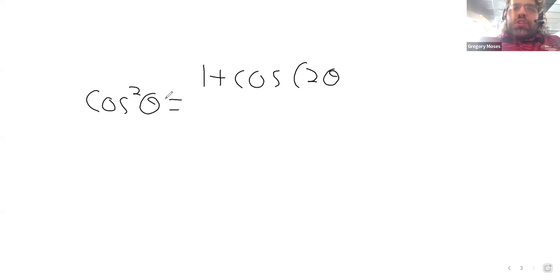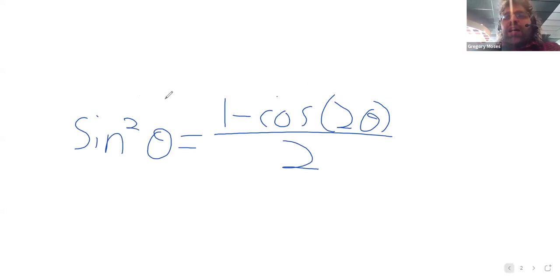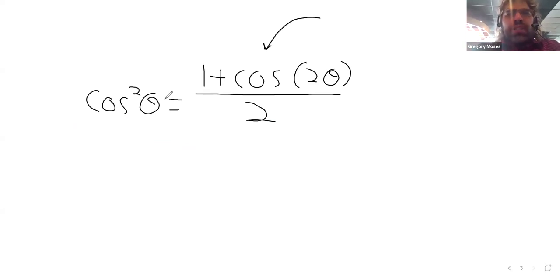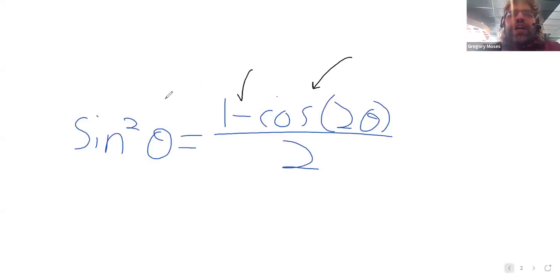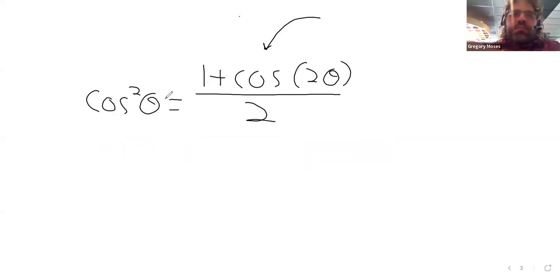And there is one for the cosine. The reduction formula for the cosine is very similar to the reduction formula for the sine. Notice that the cosine appears here, and the cosine also appears here. The only difference between them is that this subtraction becomes addition on this formula.